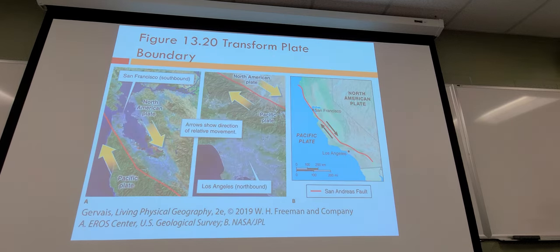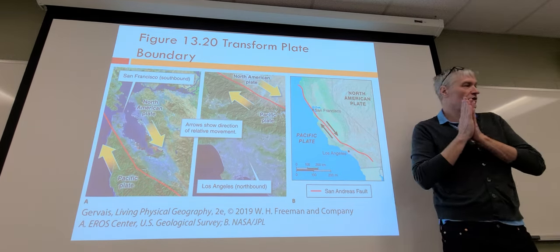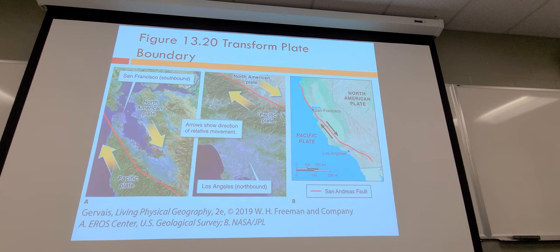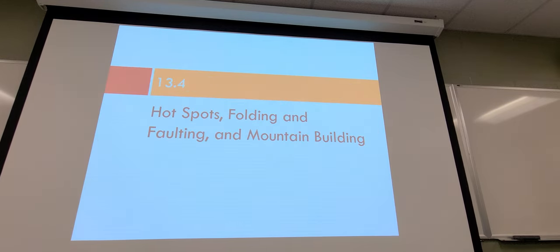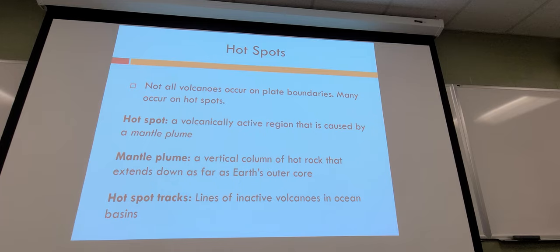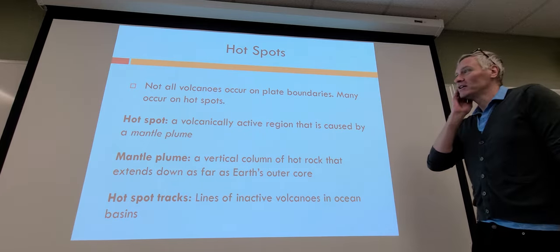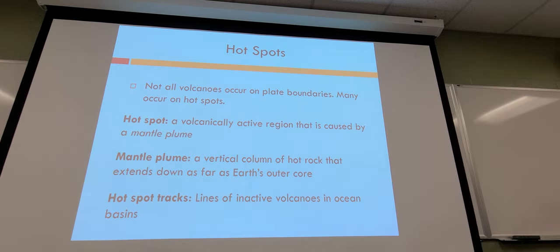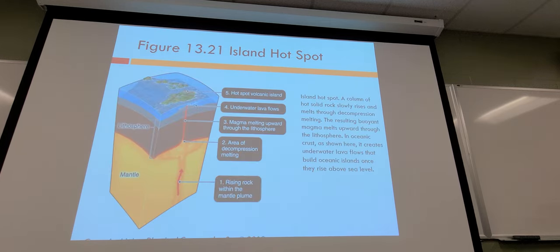Transform plate boundaries are the ones going side by side. They're still notable because they create earthquakes and environmental damage, but they don't create volcanoes or mountains — maybe hills, but not a lot of mountains when going side by side. Hot spots are where one part of magma keeps going up while the crust is being pulled over it.